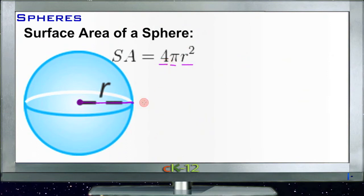The calculation is really pretty easy. If you have a sphere with a radius of 3, then you'd have 3 squared, which is 9, times pi, times 4.